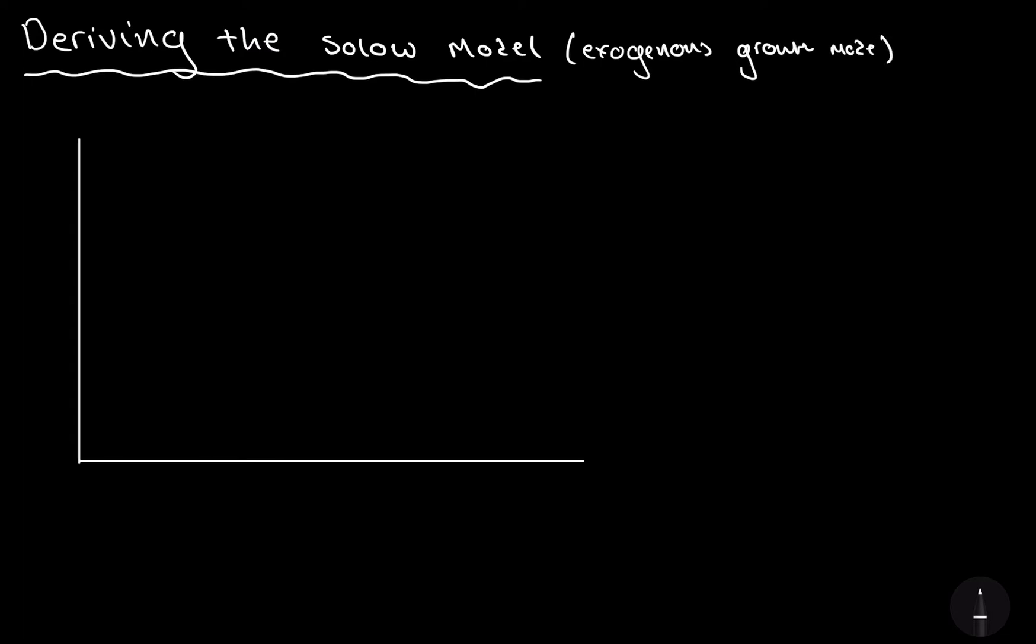Exogenous growth model. Now, exogenous means that factors that are going to change the curves in this model are caused by the external environment, it's not caused internally. So, without further ado, let's derive this model.